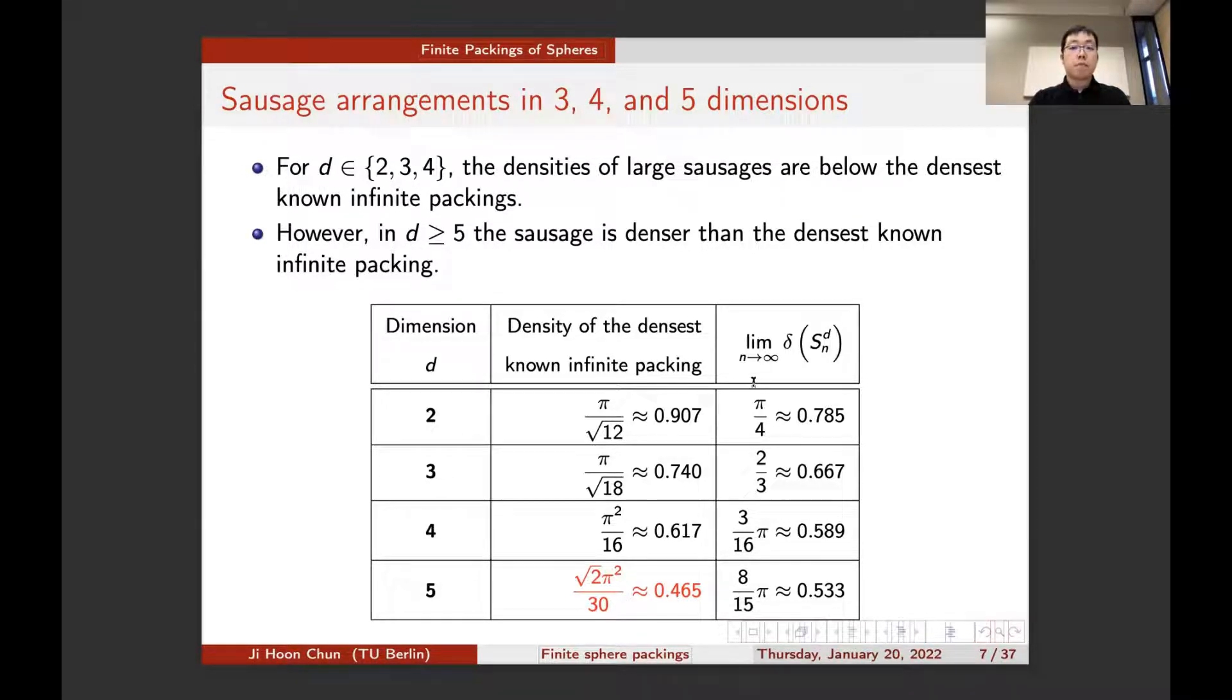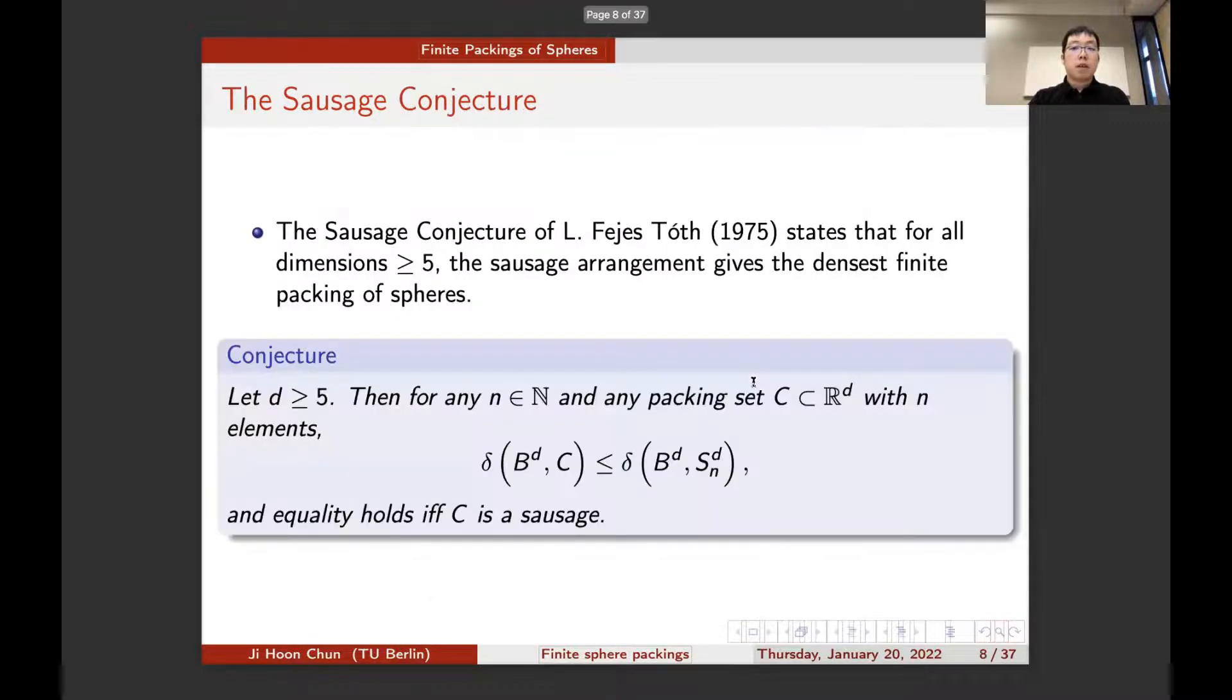For dimensions 3 and 4, the density of the sausage is less than the density of the densest known infinite packing in those dimensions. However, this does not hold true once you reach dimension 5, because in dimensions greater than or equal to 5, the sausage is denser than the densest known infinite packing. The sausage conjecture of Fejes Tóth states that, in fact, for all dimensions greater than or equal to 5, the sausage arrangement gives the densest finite packing of spheres.